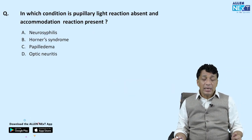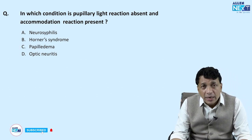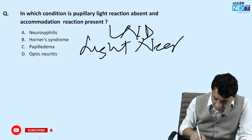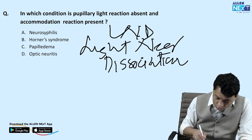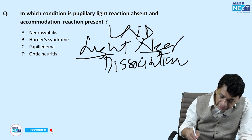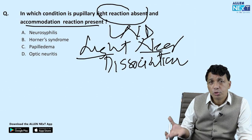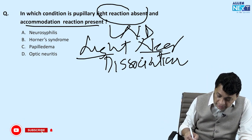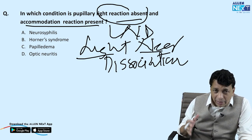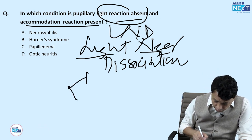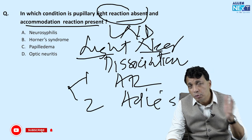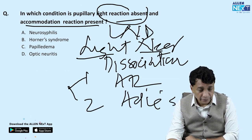In which condition is the pupillary light reaction absent but the accommodation reaction present? This is called LND — light-near dissociation — where the two reactions are dissociated. The light reaction is absent and the accommodation (near/triple) response is present. This is memorized as 'light negative, accommodation positive.' The two most important causes are the Argyll Robertson pupil and Adie's pupil.